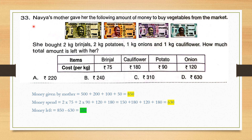Question number 33. Navya's mother gave her money to buy vegetables. She bought 2 kg brinjal, 2 kg potatoes, 1 kg onion, and 1 kg cauliflower. Her mother gave 500 plus 200 plus 100 plus 50, totalling 850. She spent: 2 times 75 for brinjal, 2 times 90 for potatoes, 120 for onion, and 180 for cauliflower, totalling 630. Amount left is 850 minus 630 which is 220. The correct answer is option A, 220.